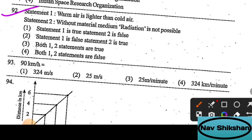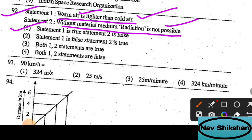Second question: warm air is lighter than cold air - it is certainly true. Without material medium, radiation is not possible - no, it is possible; the sun rays are coming. For question number 92, option number 1 is correct: statement 1 is true but statement 2 is false. As you know, hotter air rises up and colder air is heavier; it remains beneath.